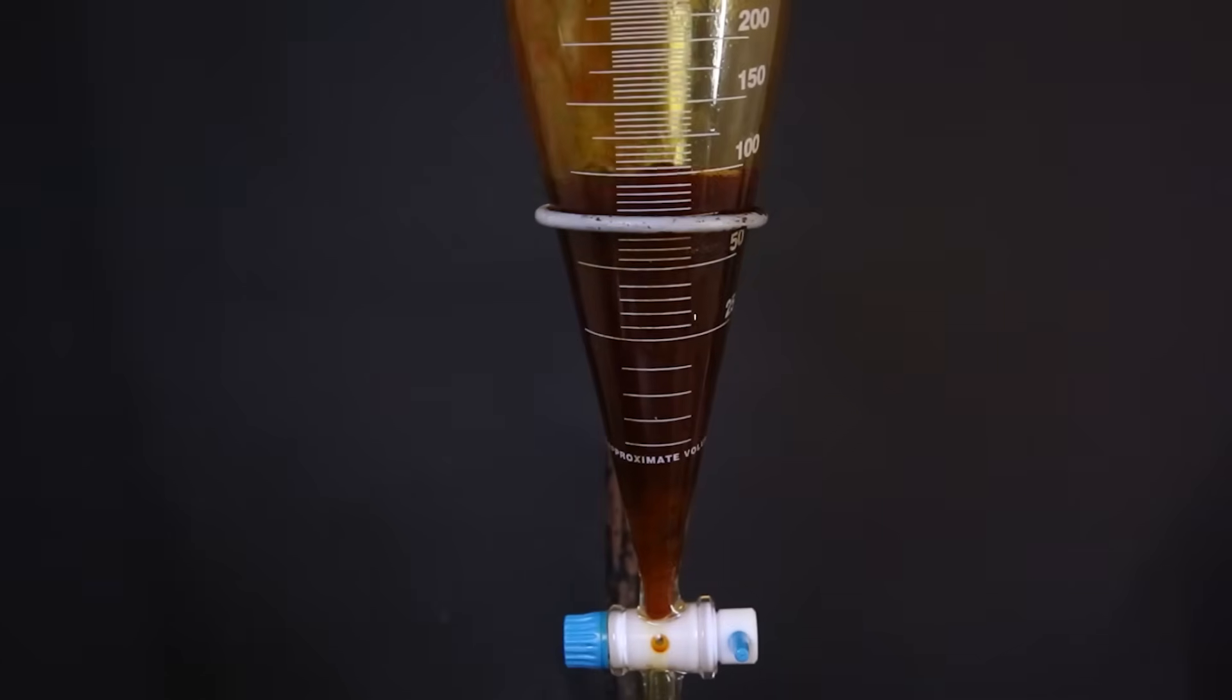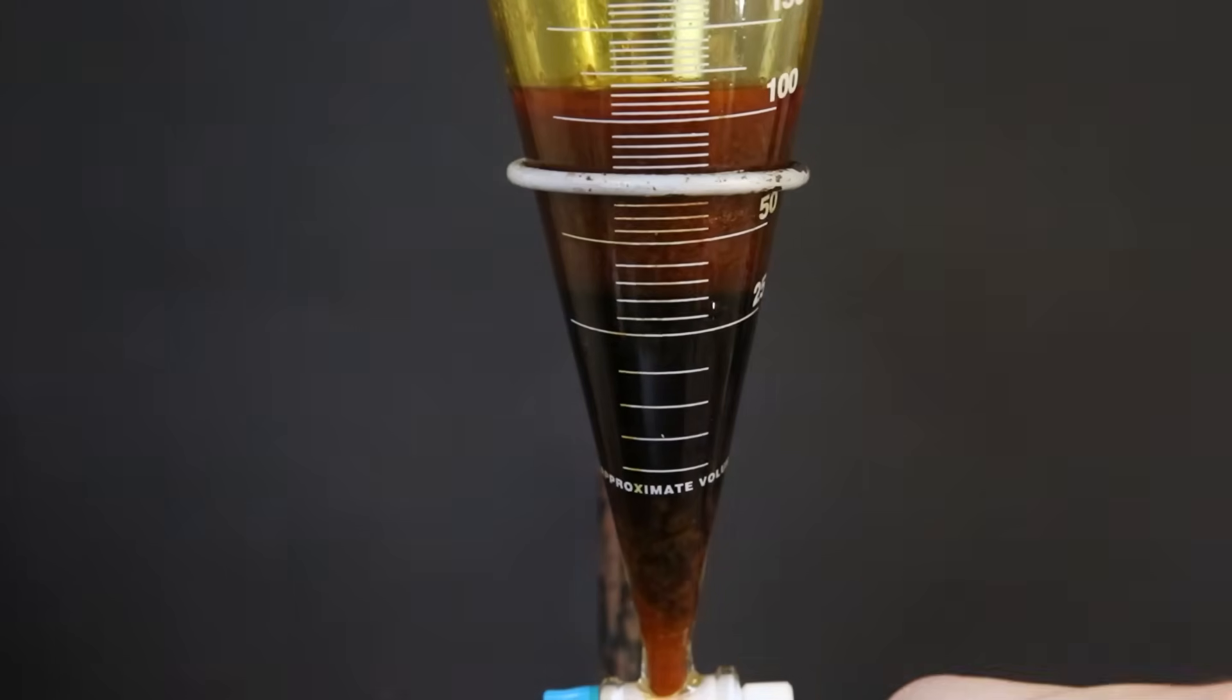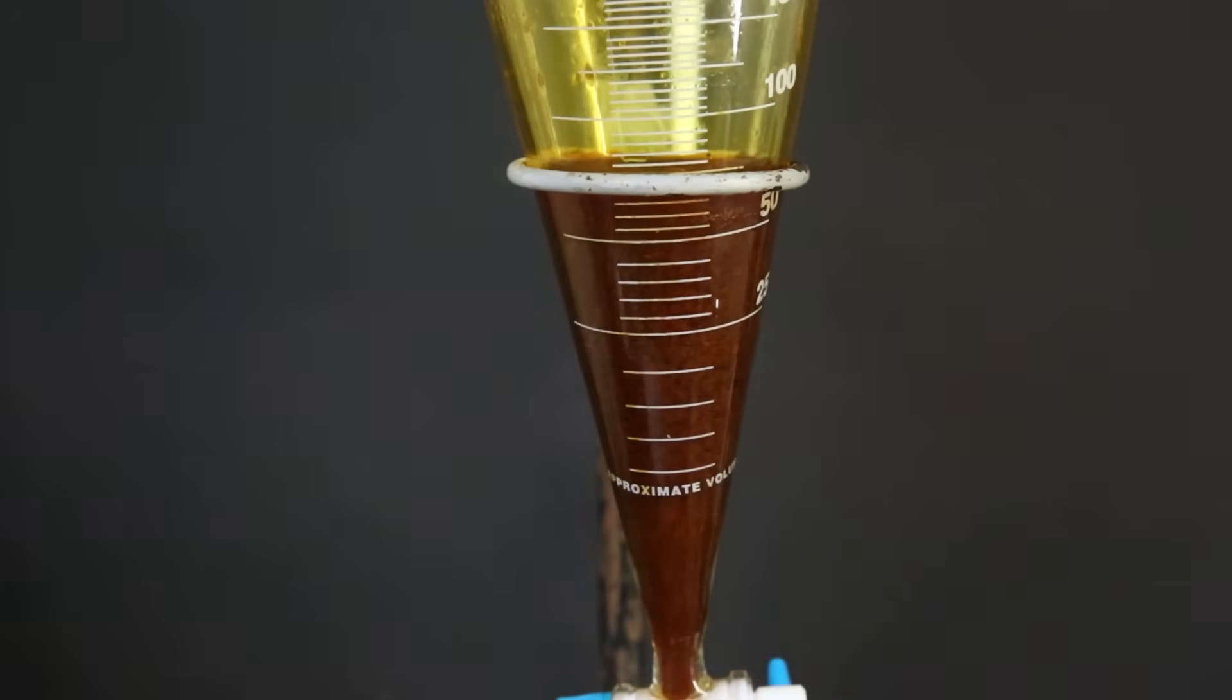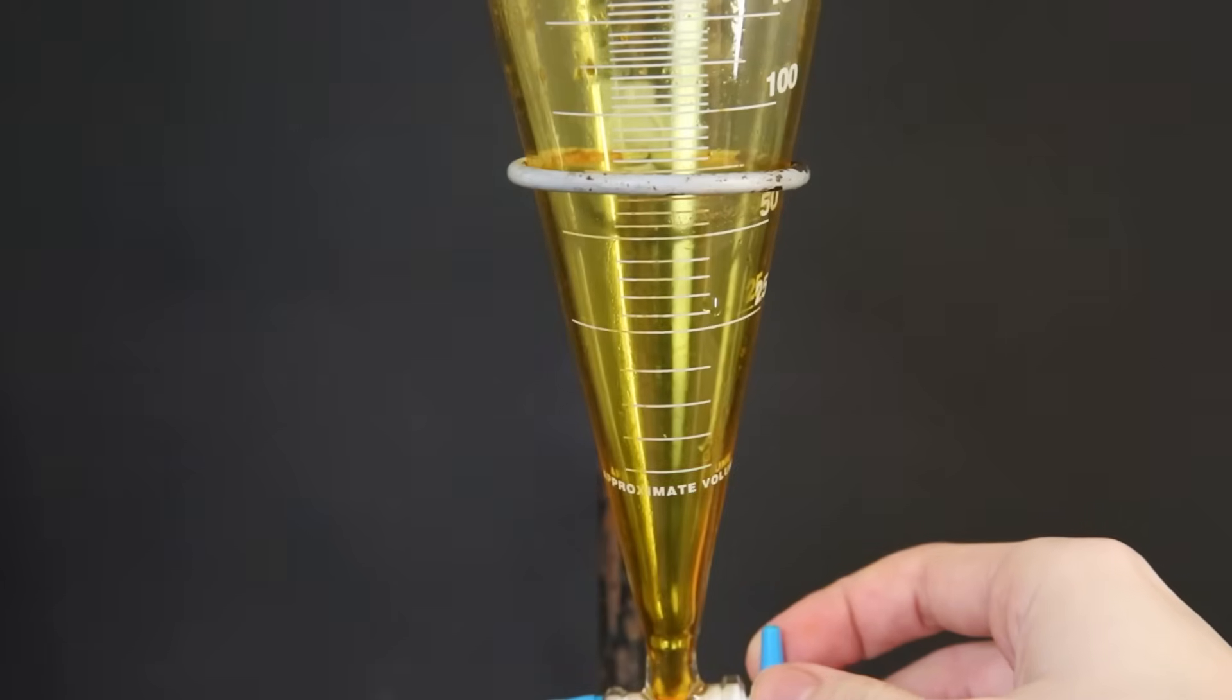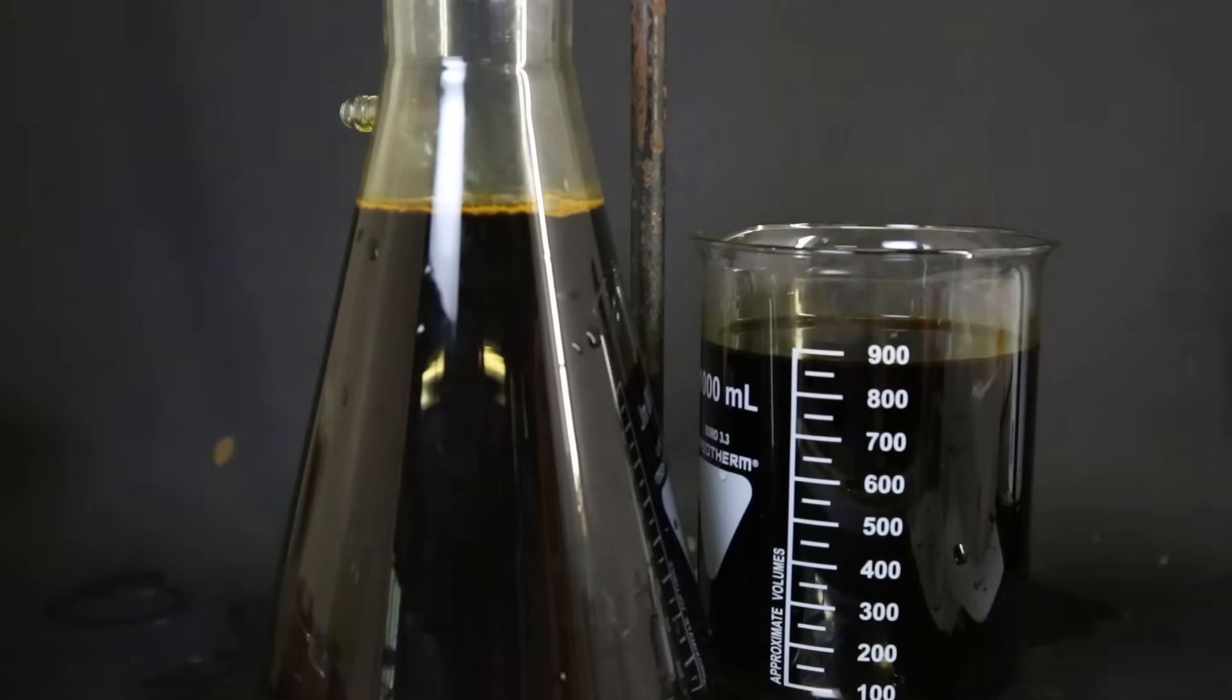I then mixed the filtrate with a bunch of DCM and separated the water layer from the DCM layer. So I put the DCM layer on the side, which should contain a large part of the oxidized lignin products, but the remaining water layer also still contains some of it.